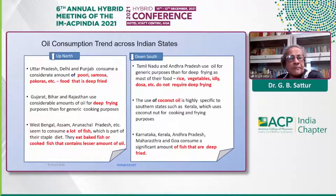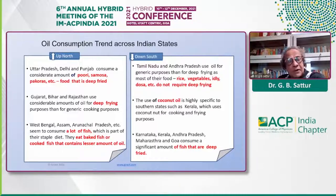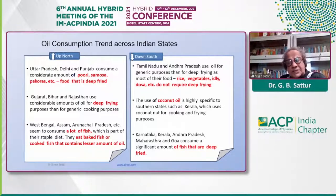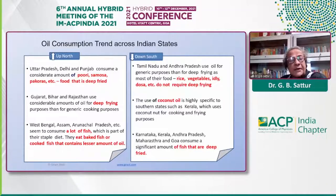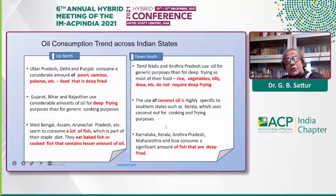When there is such a huge variation, you can see that up north there is much deep-fried food like samosas, and even in Gujarat it is deep-fried. In West Bengal, we suppose their brains are very clever because they eat a lot of fish, which is extremely good as a brain tonic. Importantly, they don't deep-fry the fish — they eat baked fish or use very little oil. Unlike in Karnataka and Kerala, where fish is deep-fried. Coconut oil is very much confined to Kerala, and we'll come back to the coconut oil controversy in a while.